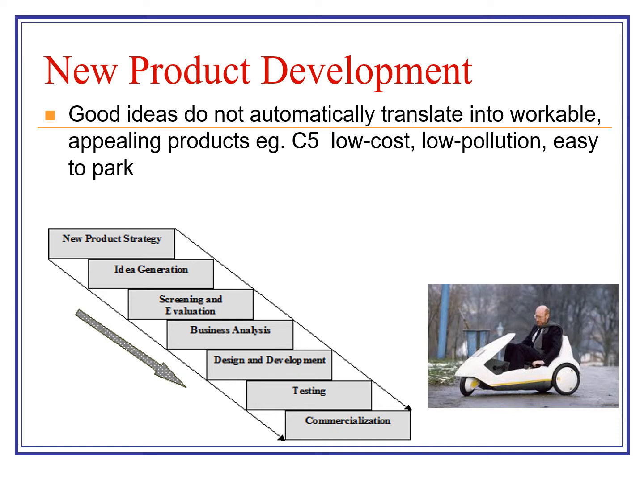A good idea may be a great idea, but it doesn't always translate into a workable or appealing product. The Sinclair C5, way back in the 80s, is a classic case study. It came out saying: here's a low-cost, low-pollution, easy-to-park means of transport — this will revolutionize how we get to work. Clive Sinclair had great success with electronics in the 70s, so he was held up as a guru and a leading light, getting a lot of attention.